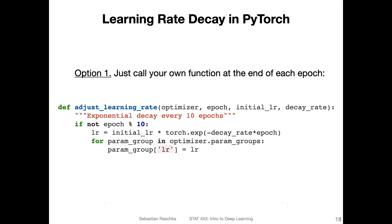So first, the manual way, the tedious way, we can define our own function to do learning rate decay in PyTorch. So here I defined a function called adjust_learning_rate. And this is implementing the exponential decay that we talked about in the last video. So what it is doing is it's every 10th epoch.